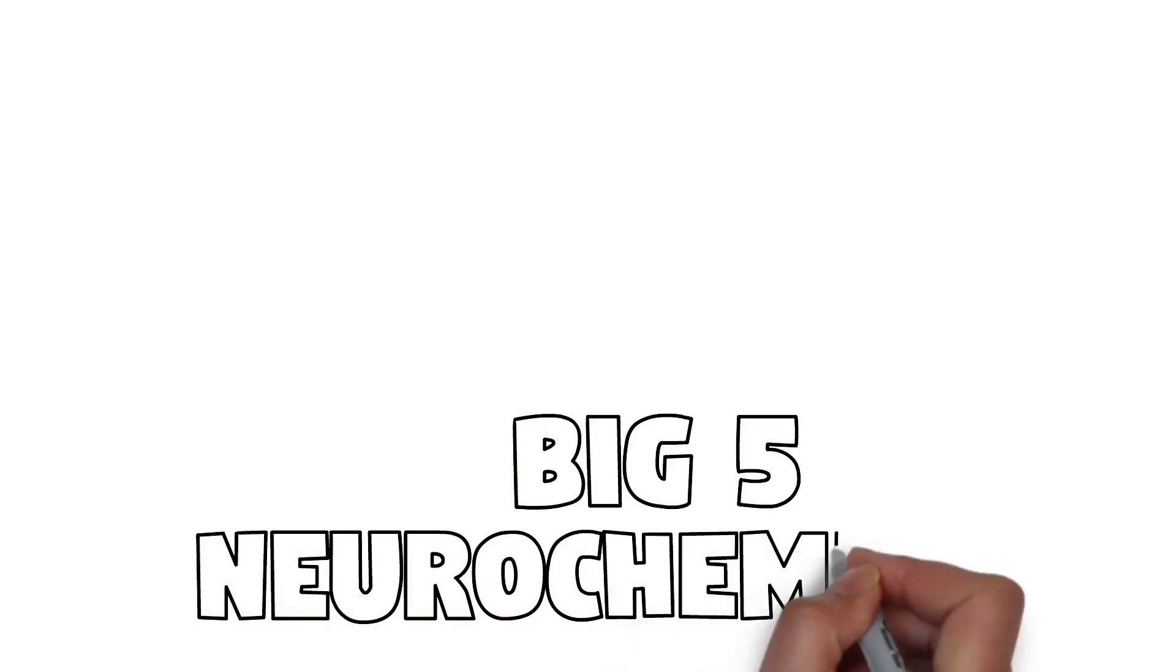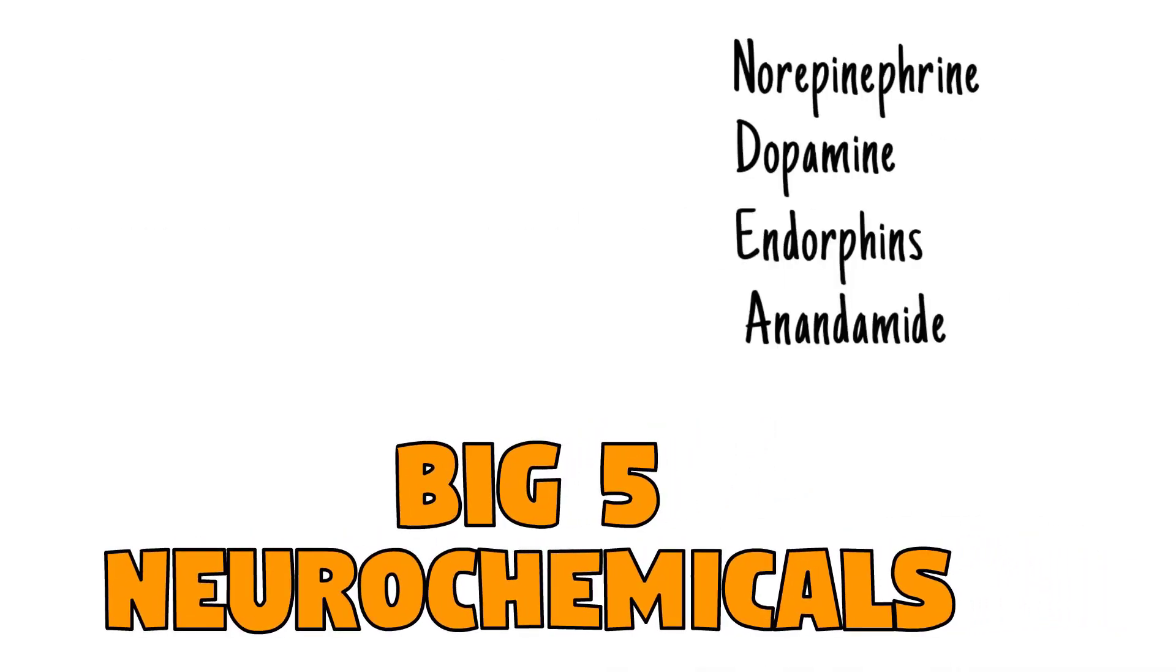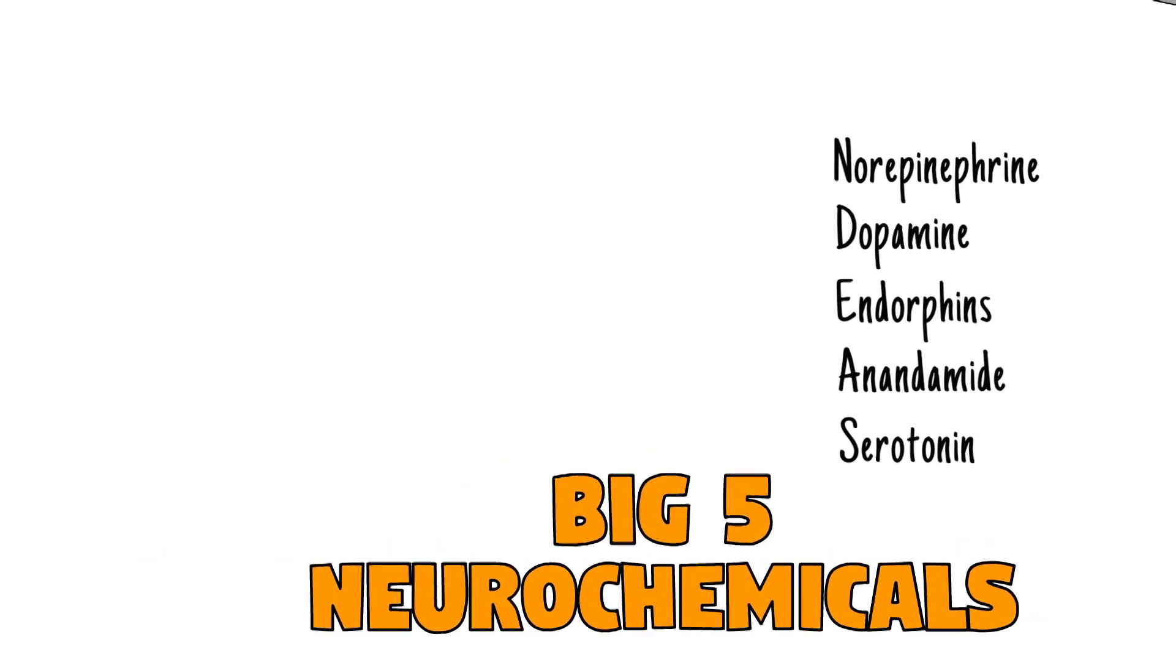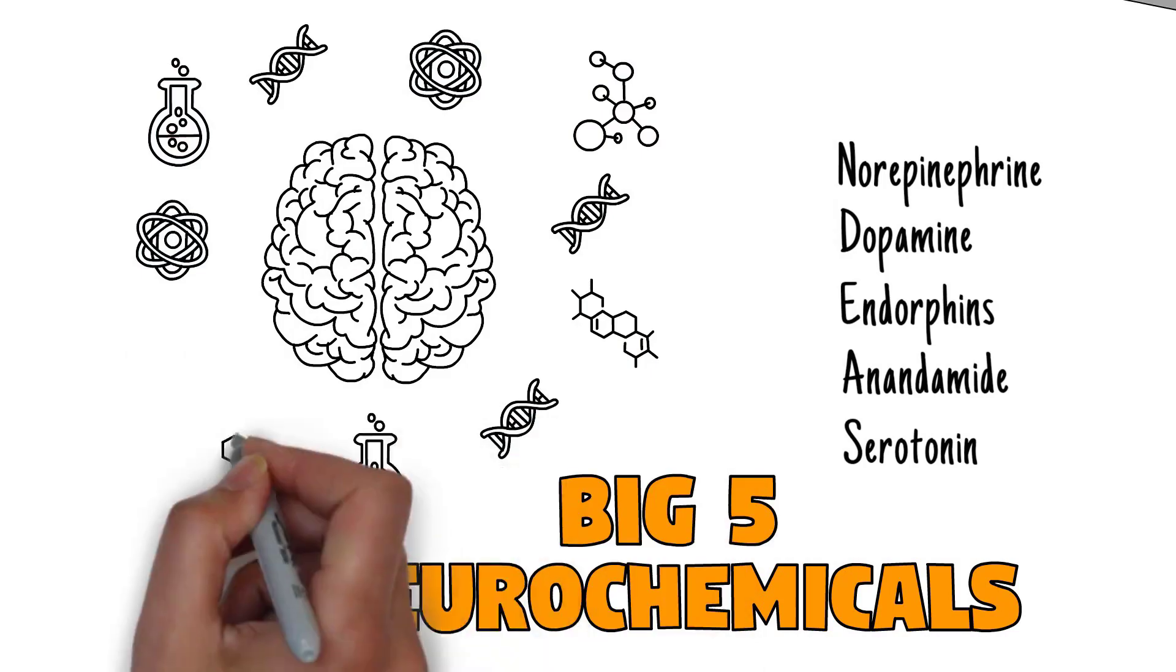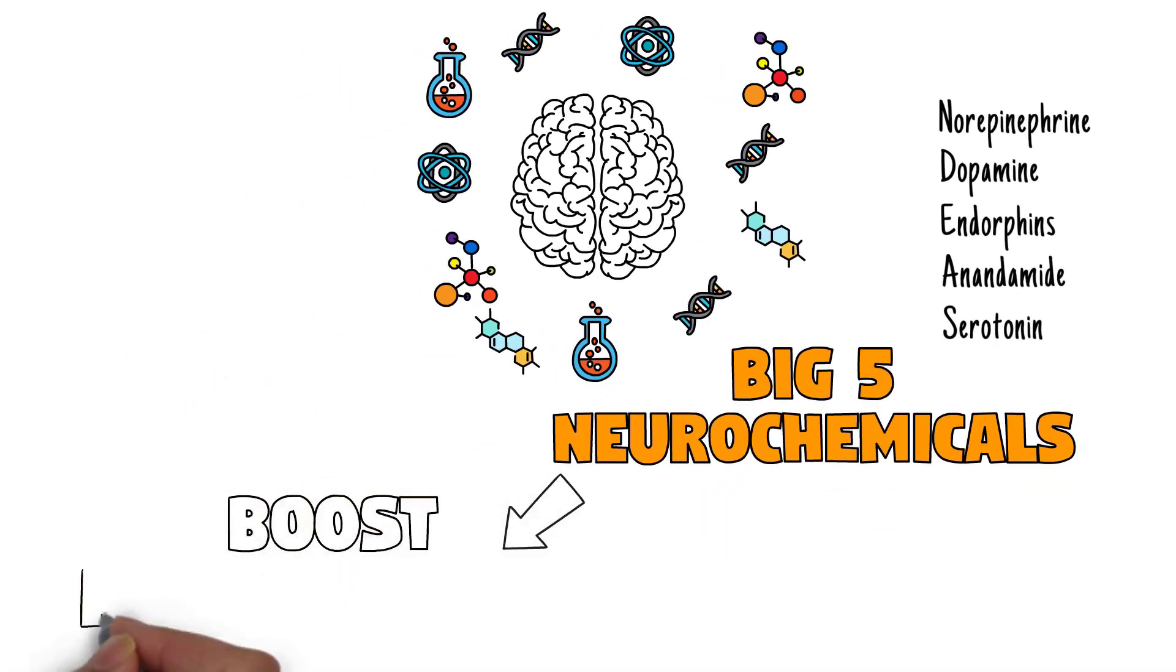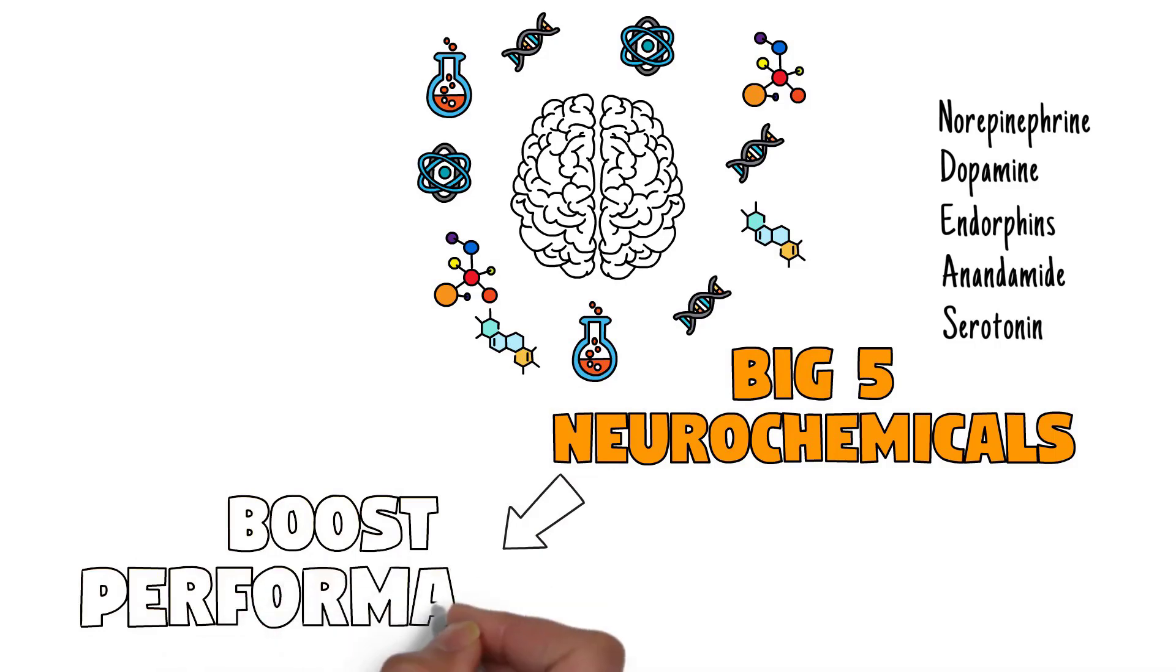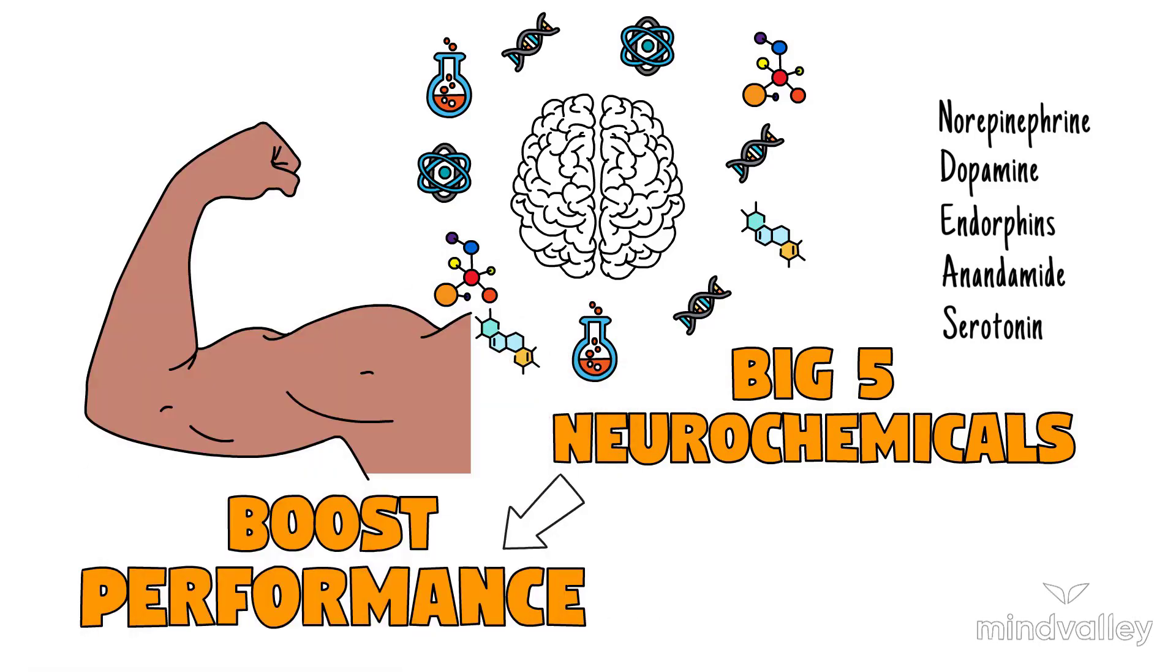In flow we get five of the most potent neural chemicals that the brain can produce. If you really want to understand why flow allows us to do the impossible, understanding these neural chemicals is key. All five of them amplify performance—they boost physical performance, do everything from increase strength to deaden pain to amplify muscle reaction time. More importantly, they impact cognitive function.